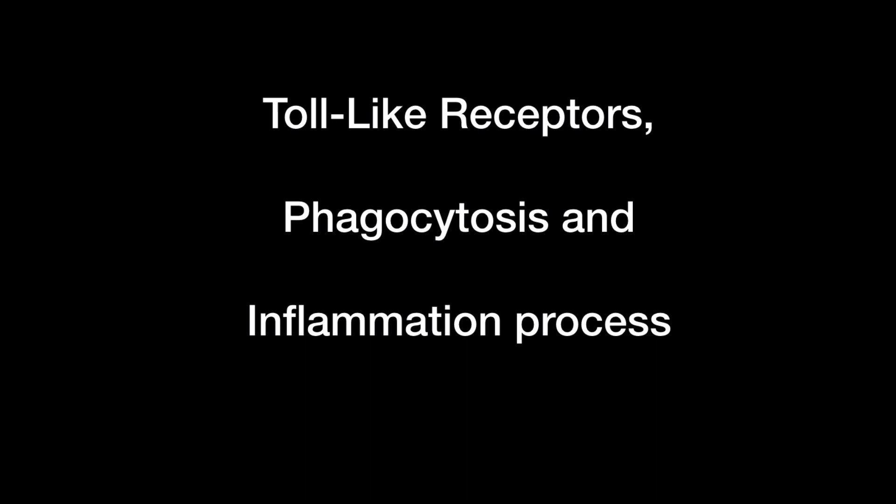In my last video we looked at the general factors in the innate immune system. Now we're going to look at the cellular factors in the immune system, which generally includes the toll-like receptors, phagocytosis and inflammation.